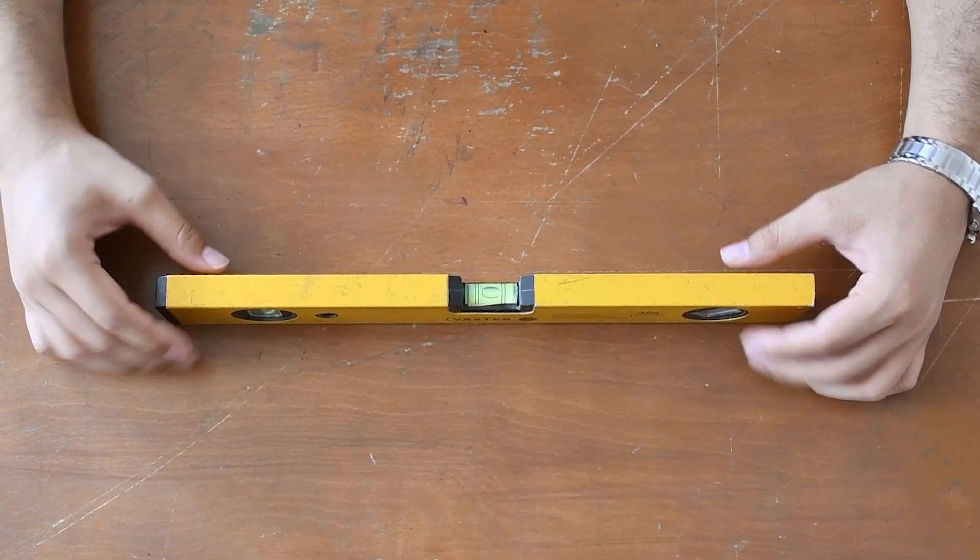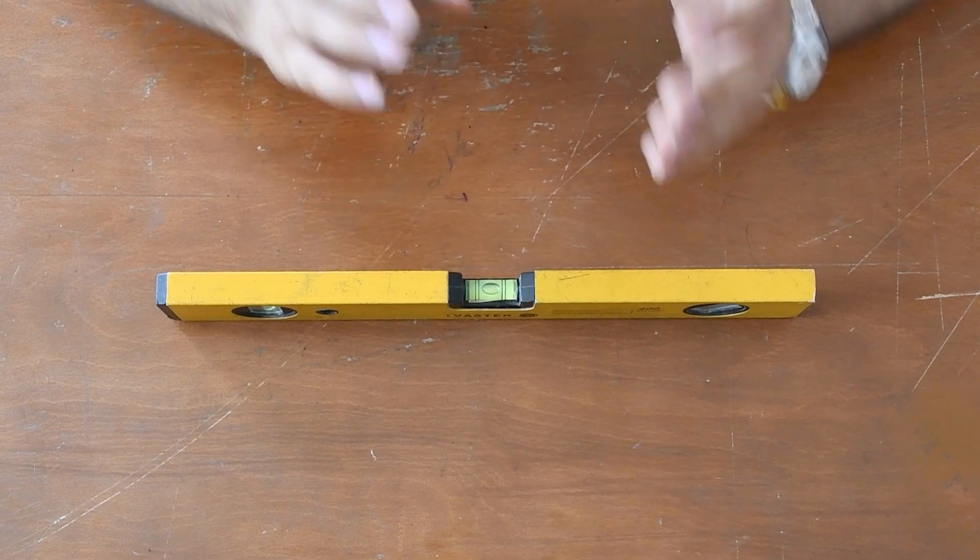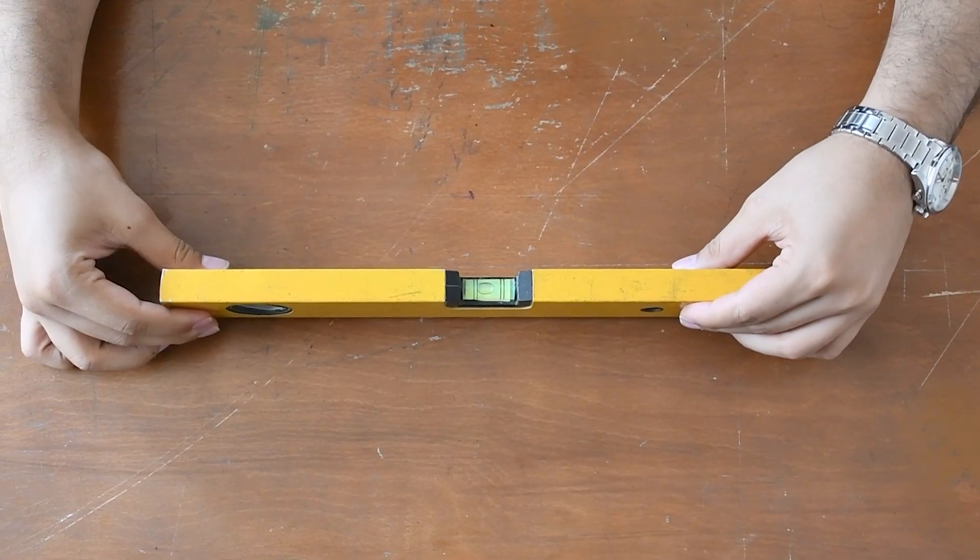Well, for checking the accuracy of the spirit level, I rotate it 180 degrees and look at the location of the bubble and compare it with the last location.